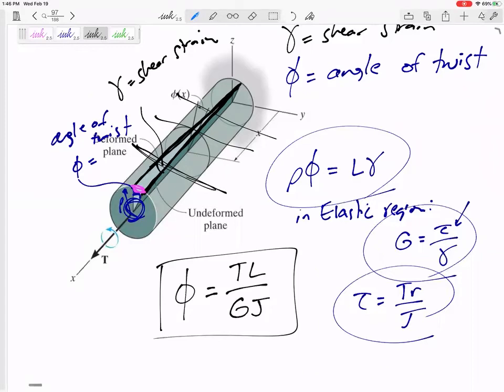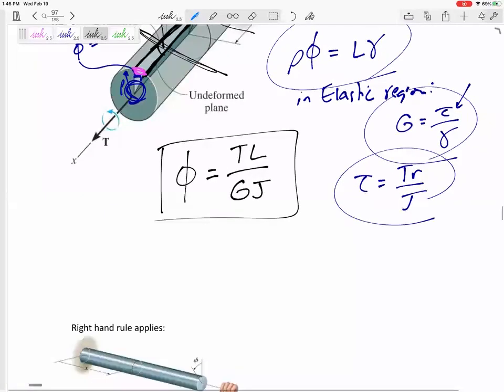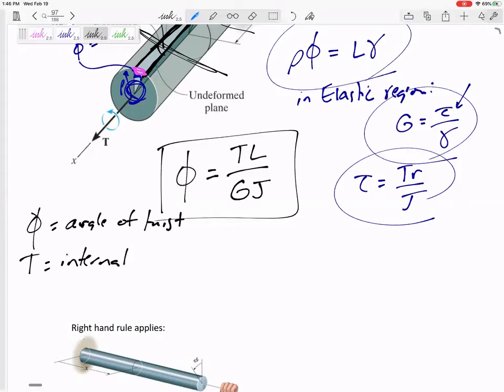I want to write the definitions of all this. Angle of twist. T is the internal torque, the internal torsional moment.